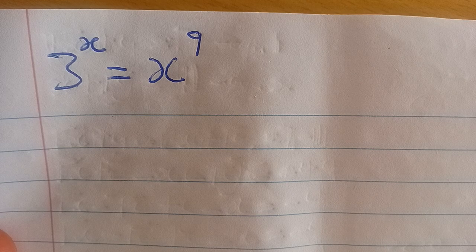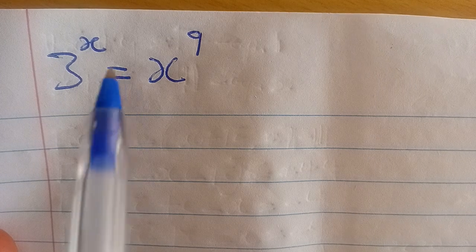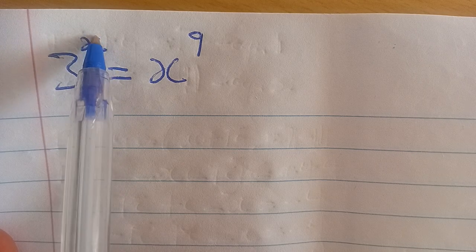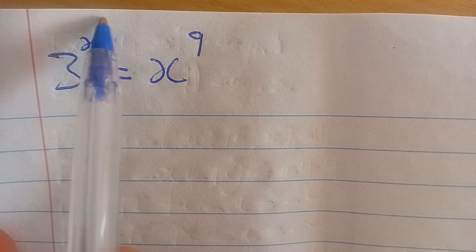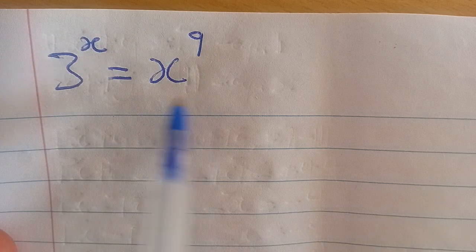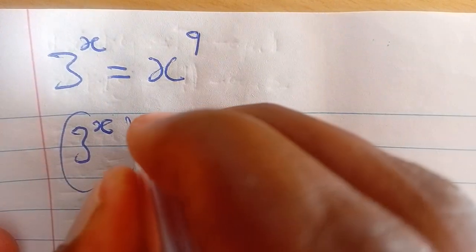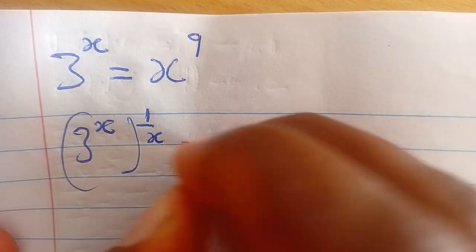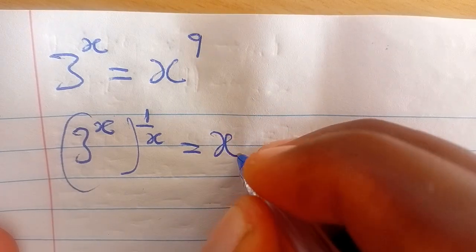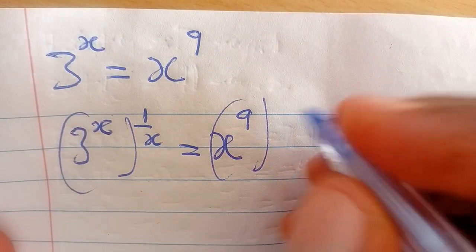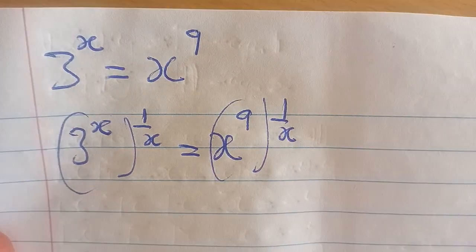So here we are going to multiply both sides — both exponents — by 1 over x, because of this x. We want to eliminate this x here, so we have to multiply this exponent x by 1 over x. And then if we do that, we need to do the same thing on the other side as well. So we are going to have 3 exponent x multiplying 1 over x, and then x exponent 9 multiplying 1 over x.